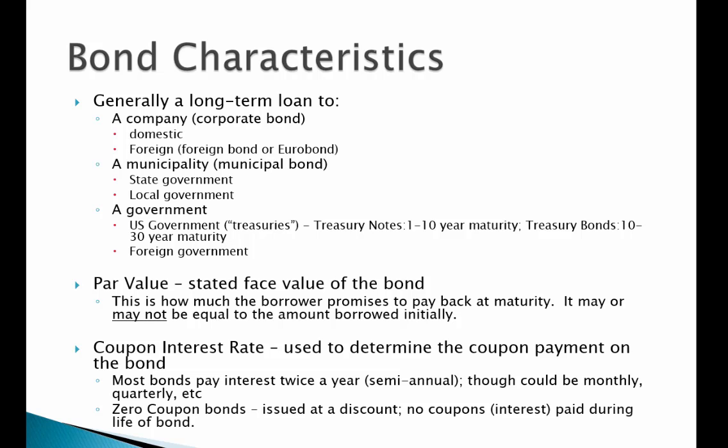Bonds are just loans to different institutions. The first thing we need to consider is the par value or face value of the bond — this is simply how much the borrower promises to pay back at maturity. Note that it may or may not be equal to the amount that's borrowed initially, such as in the case of zero coupon bonds, where the borrower may promise to pay back $1,000 per bond but may initially only receive a fraction of that amount up front.